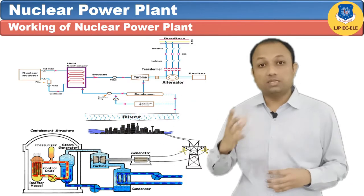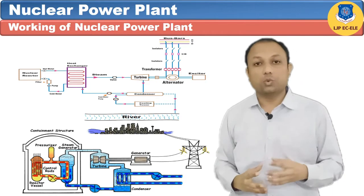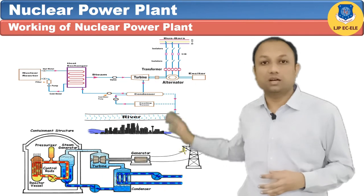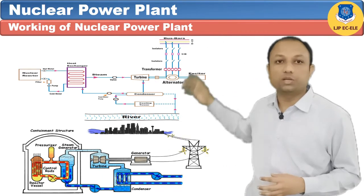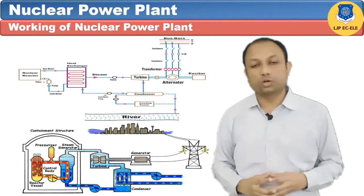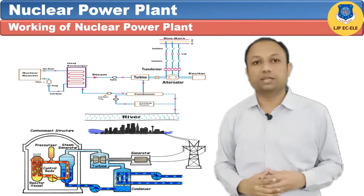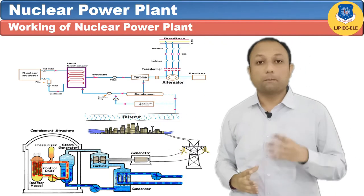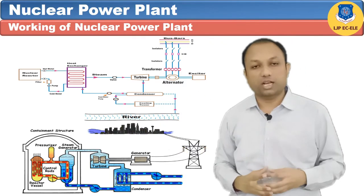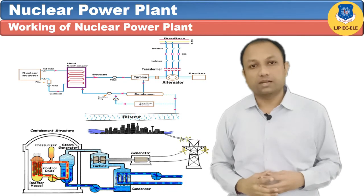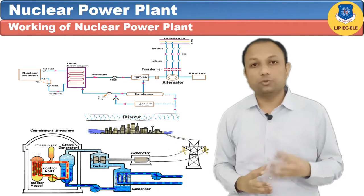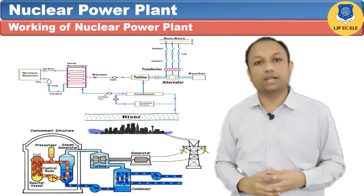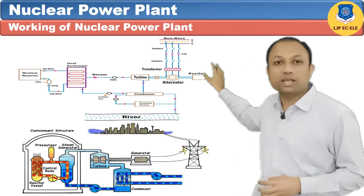The alternator, coupled to the turbine, converts mechanical energy into electrical energy. The voltage generated by the alternator is stepped up to the required value by a step-up transformer, and the transformer is connected to the bus bar through isolators and circuit breakers. Power is transmitted by transmission lines connected to the bus bars. An exciter coupled to the alternator generates DC supply necessary for the field winding of the alternator.